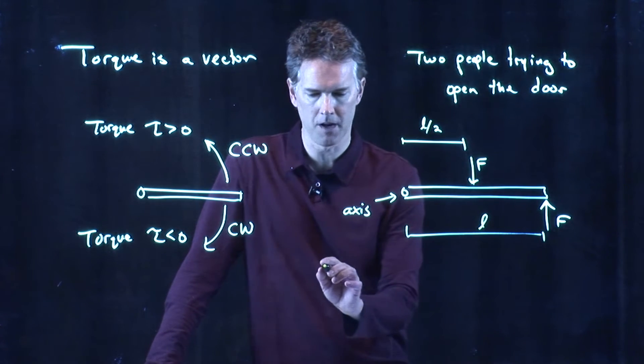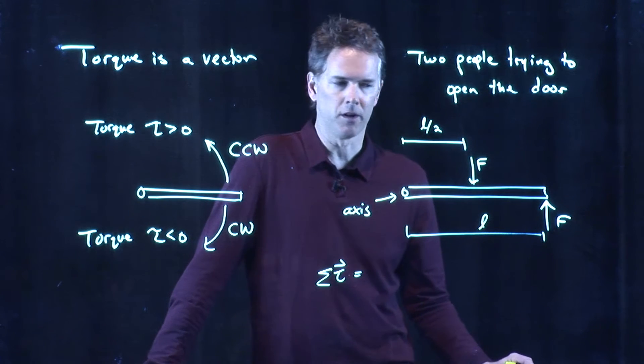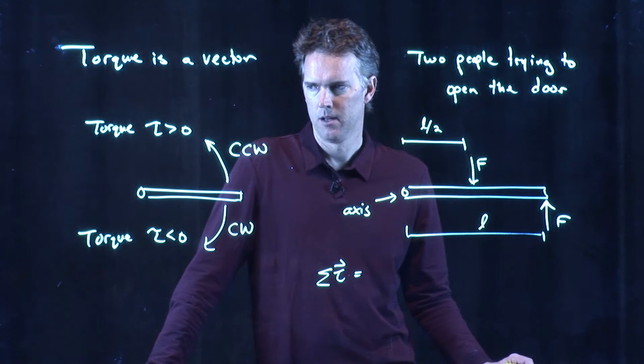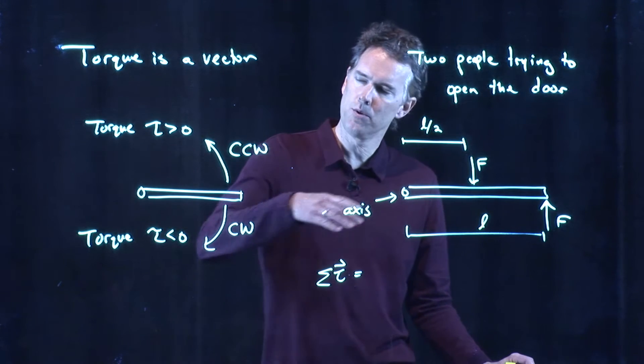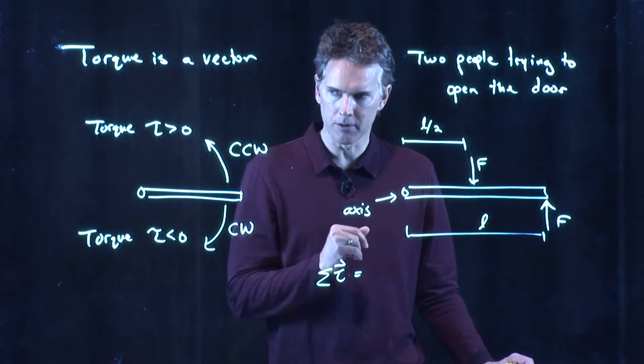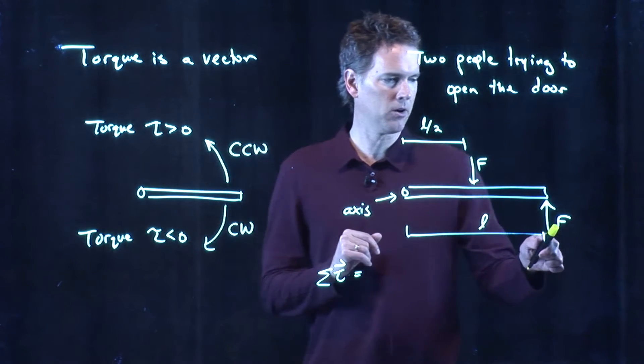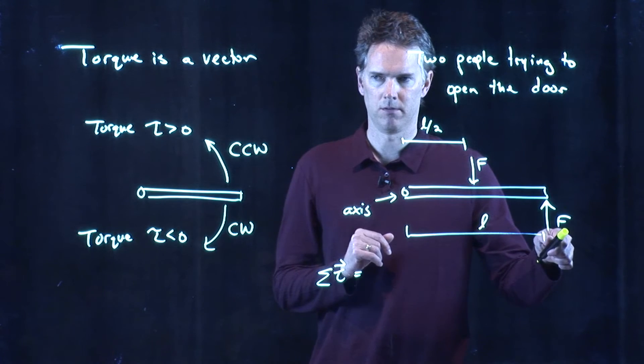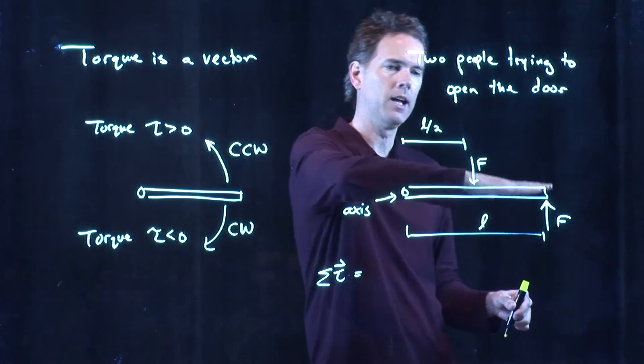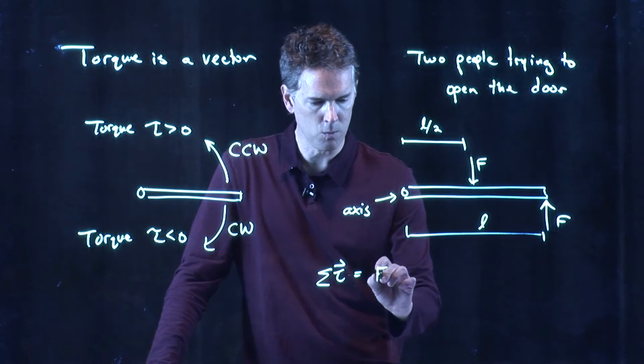All right. We need to sum up the torques. And torque is a vector, and so we have to take into account the direction. The one that is trying to rotate counterclockwise is going to be the positive torque. So which one is trying to rotate it counterclockwise? It's this one. If the other force isn't there, and this one is the only one, it's going to go like that. And that is our positive quantity.